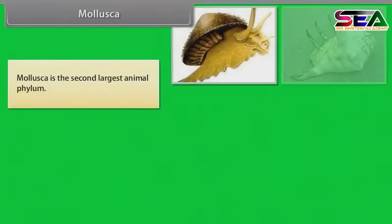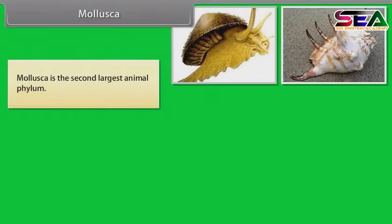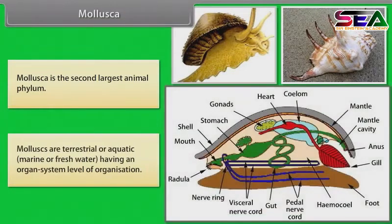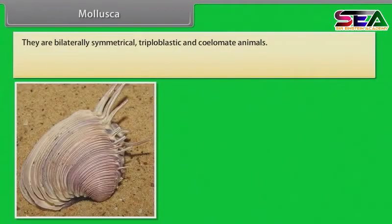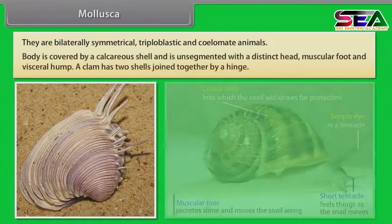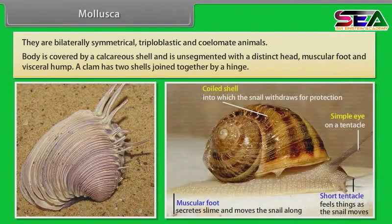Mollusca is the second largest animal phylum. Molluscs are terrestrial or aquatic — marine or freshwater — having an organ system level of organization. They are bilaterally symmetrical, triploblastic and coelomate animals.